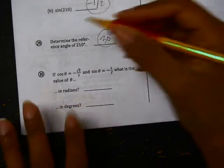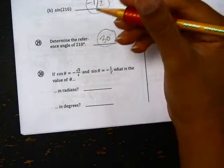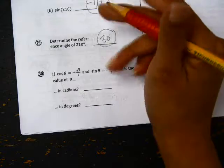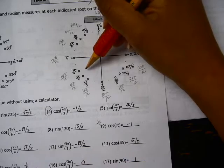Now here, we're given the exact values of cosine and sine. What is the value of θ in radians and degrees? Cosine is negative root 3 over 2. Sine is negative 1 half. So I am in this quadrant because both are negative.